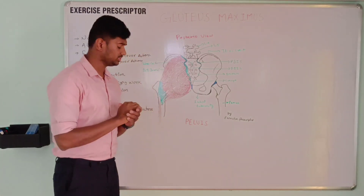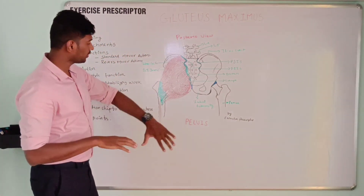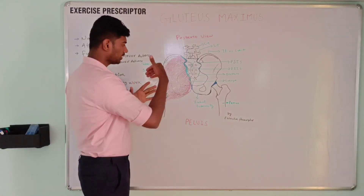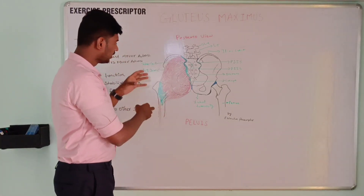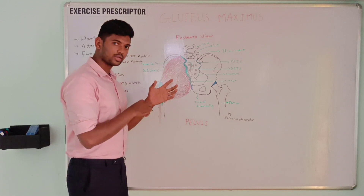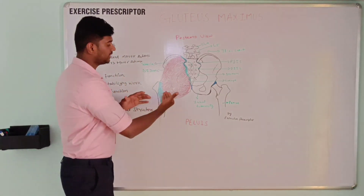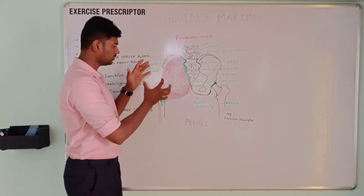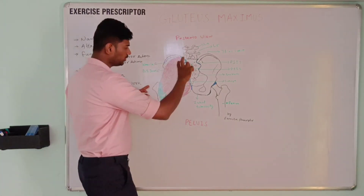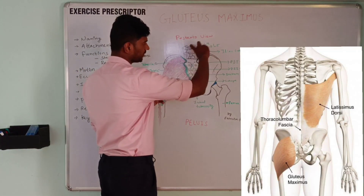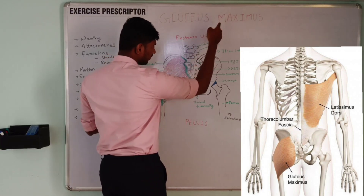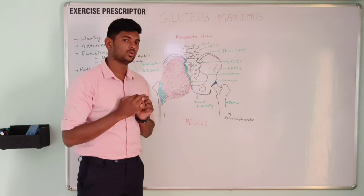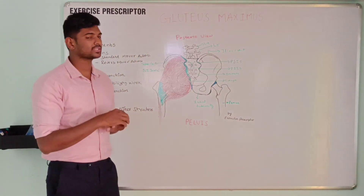Relationship to other structures: gluteus maximus is superficial in the posterior pelvis. So it covers the gluteus minimus, superior gemellus, inferior gemellus, piriformis, ischial tuberosity, quadratus femoris, and many deep muscles. Gluteus maximus also attaches to the thoracolumbar fascia, forming the posterior oblique myofascial line. We will talk about these myofascial lines in future YouTube videos.